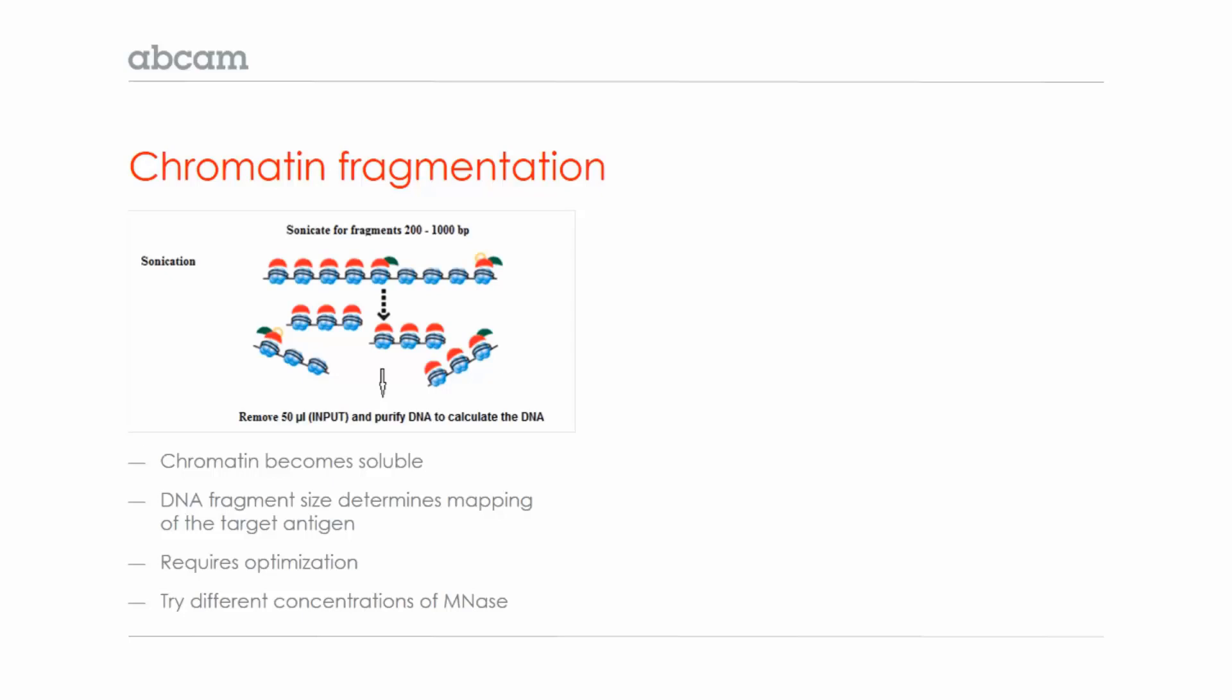If your fragment size is too large, you could be pulling down a protein that's far away from your actual DNA region of interest. So this step requires optimization. You should try different sonication times for cross-linking ChIP and different concentrations of micrococcal nuclease for native ChIP.